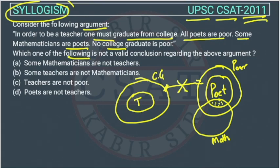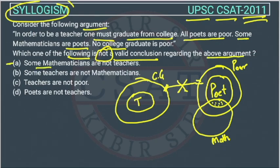Which one of the following is not a valid conclusion? We have to find which conclusion is wrong regarding the above argument. Let's check the first option: some mathematicians are not teachers. The mathematician circle is this one on the Venn diagram.